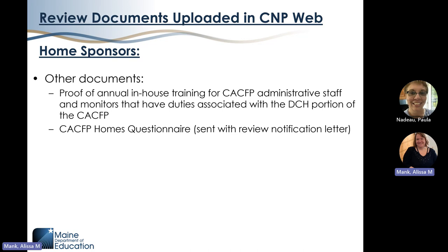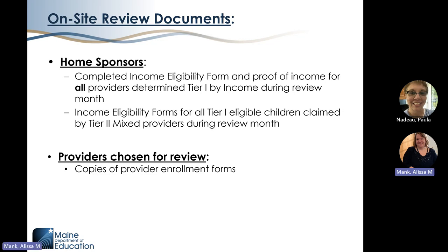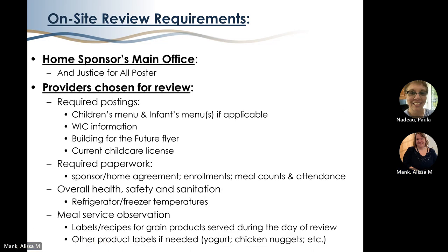Other documents that home sponsors upload include proof of annual in-house training for CACFP administrative staff and monitors, and a homes questionnaire. When we come on site to review a sponsor of family child care providers, we'll be looking at completed income eligibility forms and proof of income for all providers who were Tier 1 by household income during the review month, and IEFs for all Tier 1 eligible children claimed by Tier 2 mixed providers. We'll also look at enrollment forms for children claimed during the review month. Additional on-site requirements include looking for the And Justice for All poster at the sponsor's main office and doing unannounced visits to providers chosen for review.